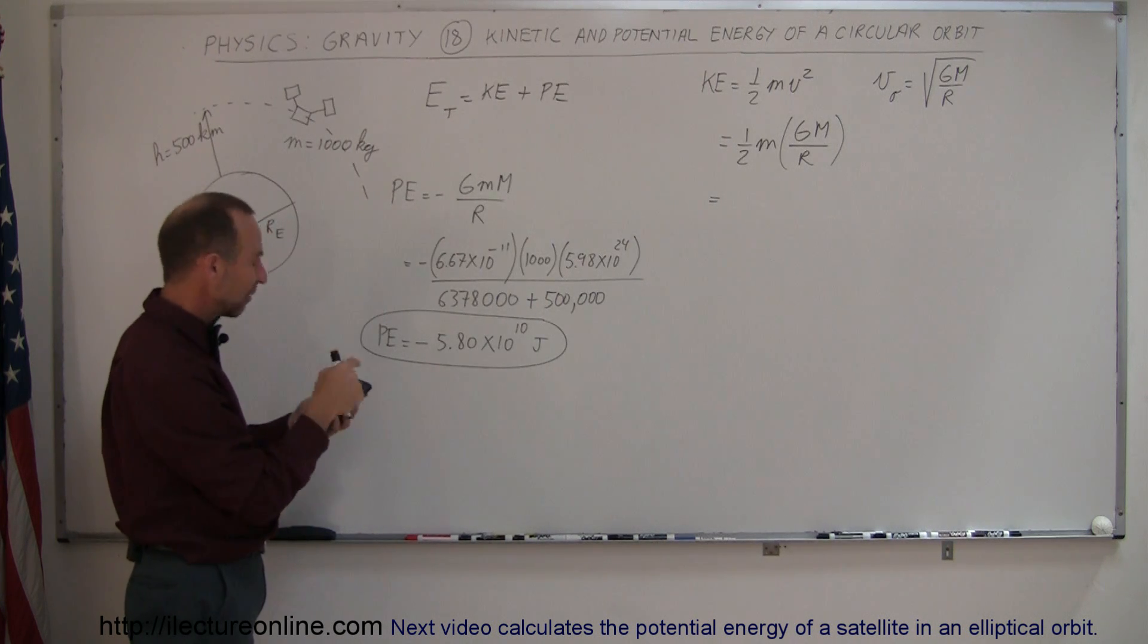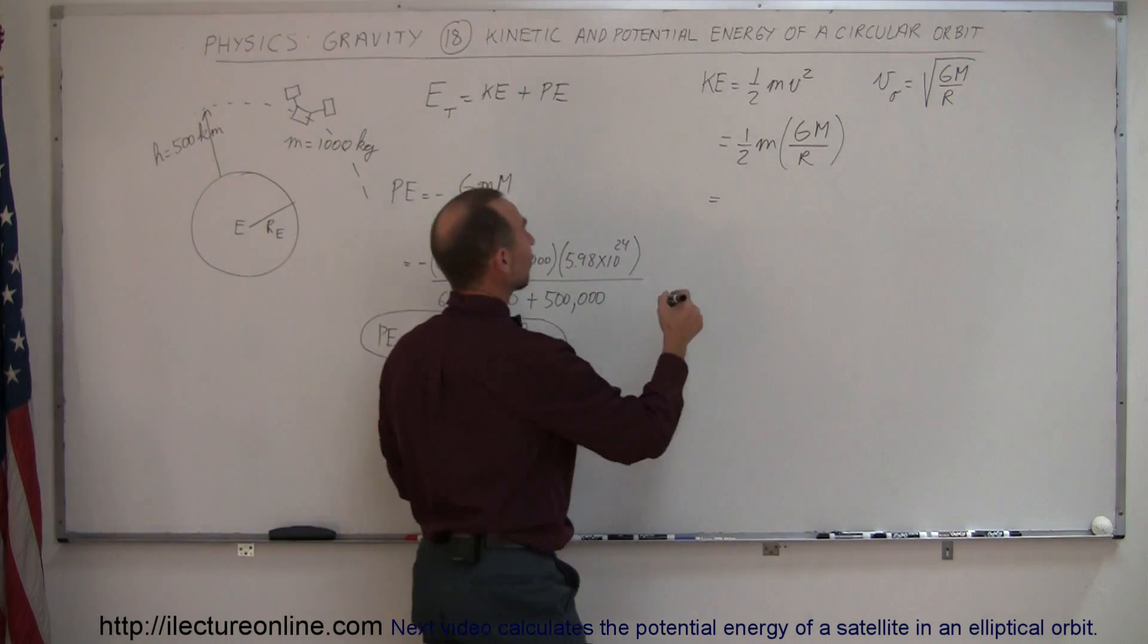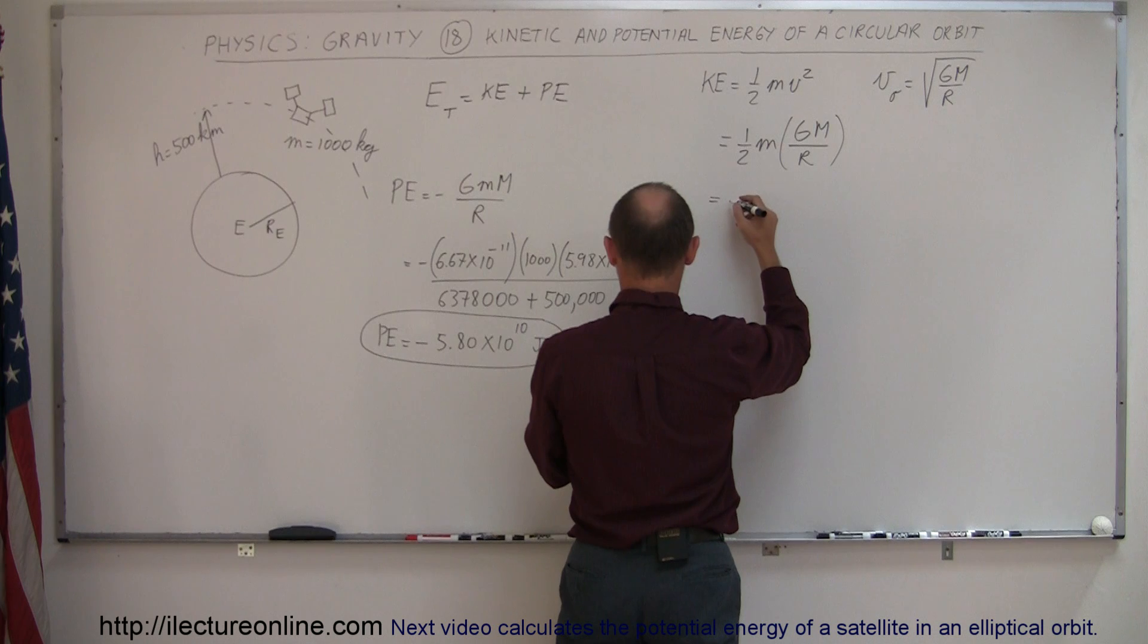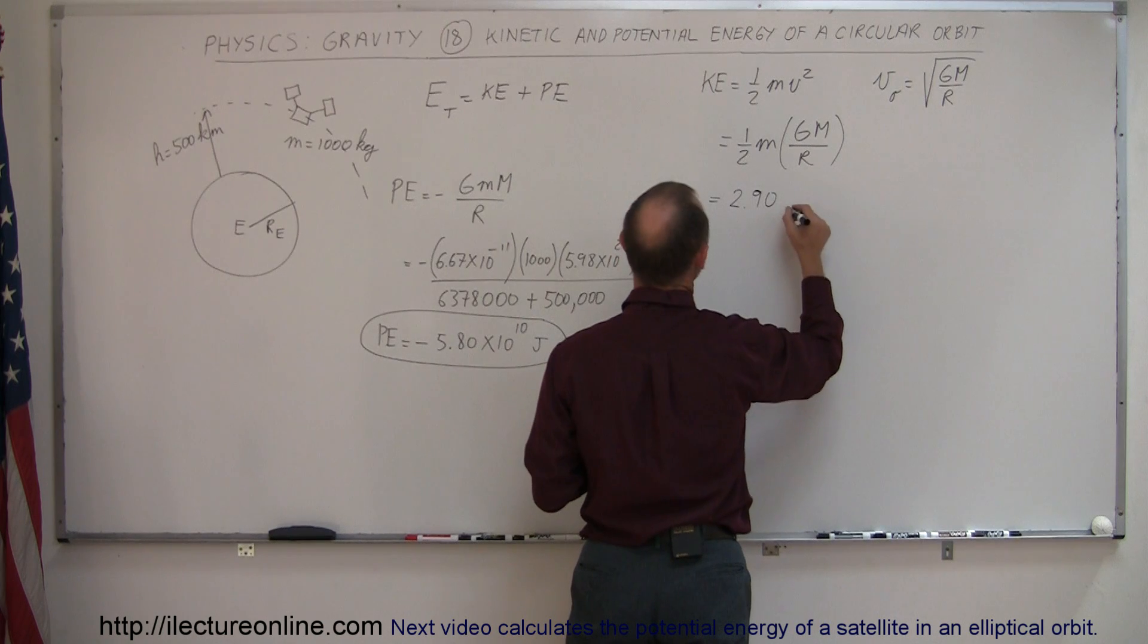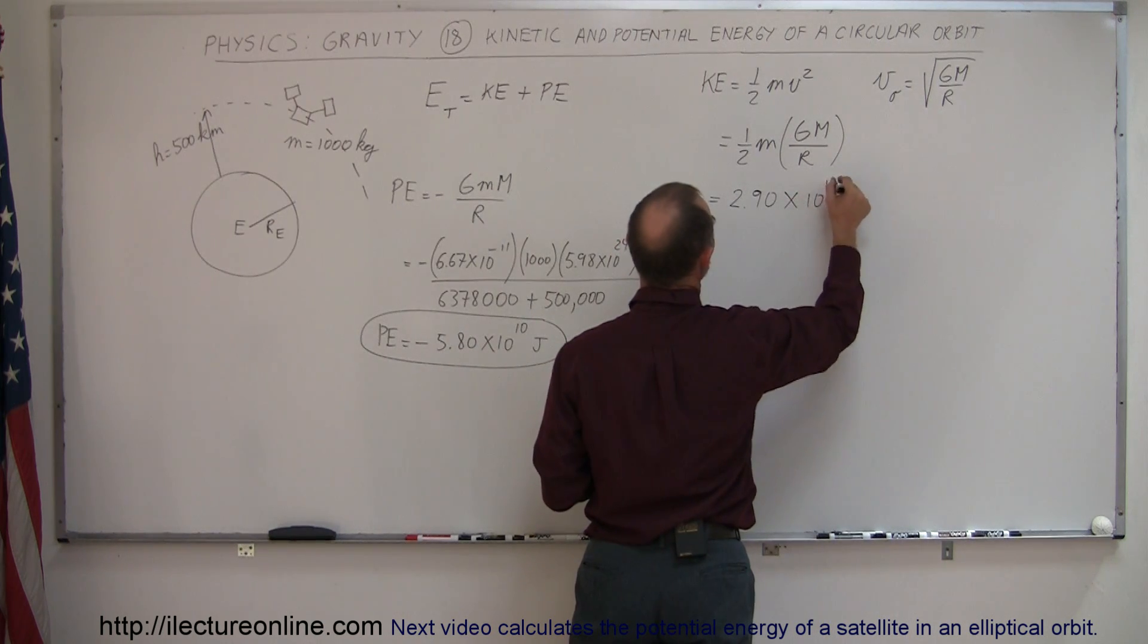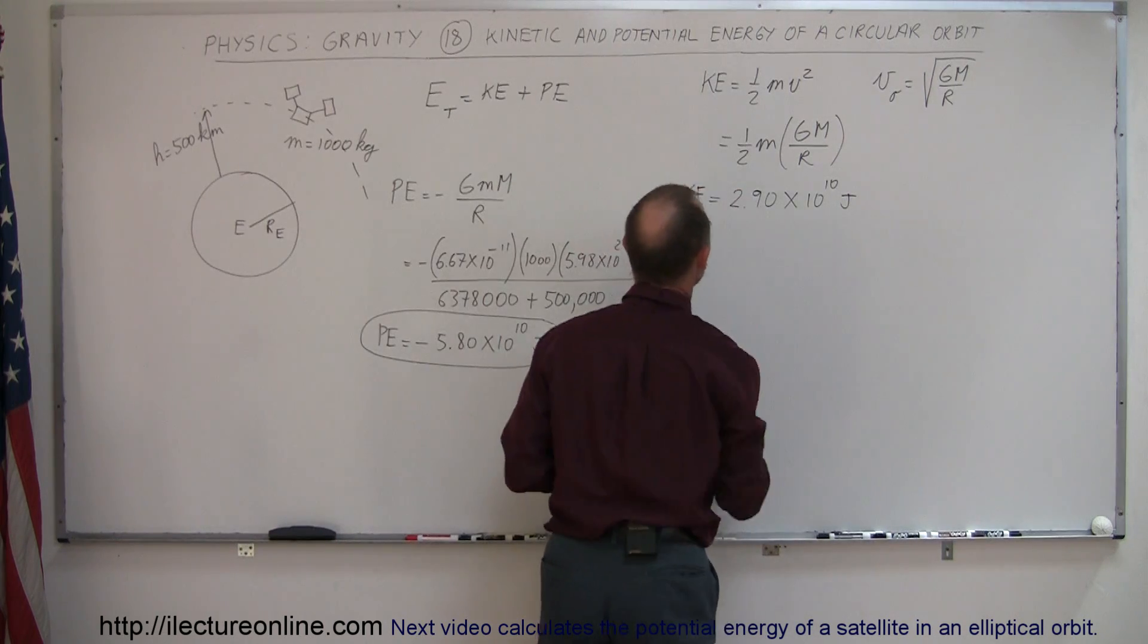So if I take this number and divide it by 2, and then of course make it positive, that means that this is going to be equal to 2.90, that should be exactly half of that, times 10 to the 10th joules. So if you plug in all the numbers, you get this exactly as the kinetic energy.